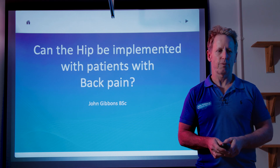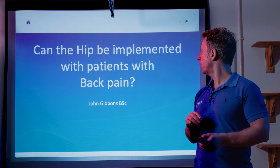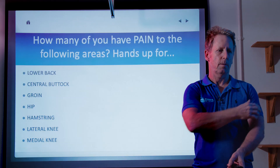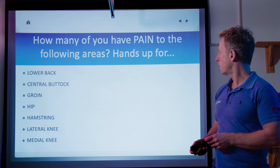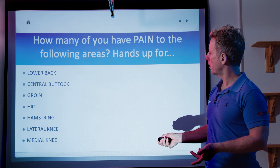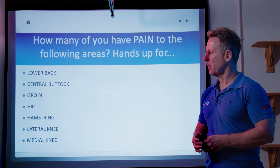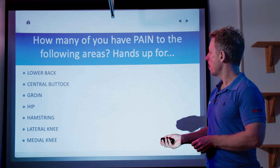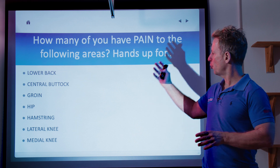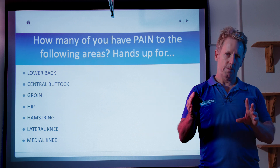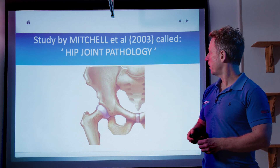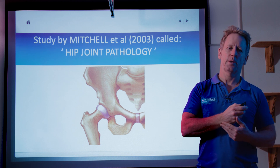There was a study done in 2003 and one of the questions was: can the hip be implicated with patients with back pain? The study by Mitchell looked at different areas — patients presenting with lower back, buttock pain, groin, hip, hamstring, knee, outside knee, inside knee, even lower abdominal pain. What they found was that patients presented with symptoms to these areas, but all of them were as a result of a pathology located within the hip joint.